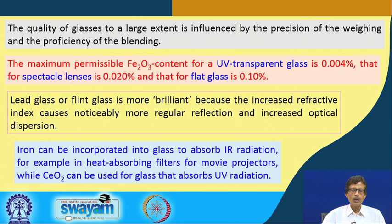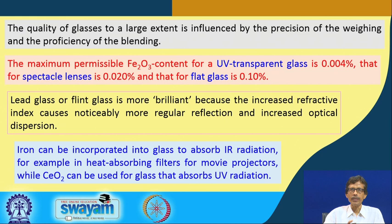If we go for cerium oxide — cerium in the tetravalent state, a lanthanide group element — cerium oxide can be used for glass that absorbs UV radiation. So you see that by modifying the different oxides, in one case with Fe₂O₃ you get UV transparent glass where UV passes through, but when you move to cerium oxide the same glass material becomes UV absorbing. Depending on industrial demand, we can modify the composition and get the desired quality of glass.